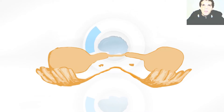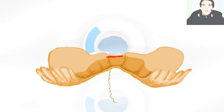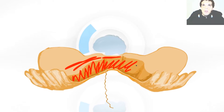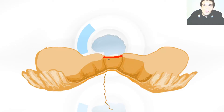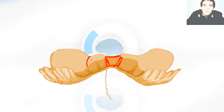Then we have the cerebellar peduncle, velum, and the peduncle. They create the borders of the fourth ventricle. The fourth ventricle is the space over here — it's more like a bag and it's filled with cerebrospinal fluid. The velum creates the roof of this fourth ventricle, and the superior peduncle also creates the roof here. But as we go further and closer to the medulla oblongata, it goes more lateral, creating the upper lateral border of the fourth ventricle.